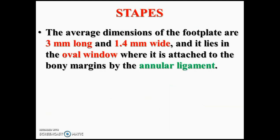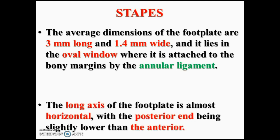The two crura join the footplate, which has a convex superior margin, straight inferior margin, and curved anterior and posterior ends. The average dimensions of the footplate are 3 mm long and 1.4 mm wide. It lies in the oval window by virtue of the annular ligament. These measurements are very important in total ossicular reconstruction, stapedotomy, and stapedectomy in cases of otosclerosis. The long axis of the footplate is almost horizontal, with the posterior end being lower than the anterior end.